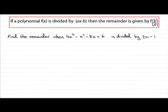Hi. In this example, I'm going to show you how we can find the remainder when the polynomial 4x to the power 4 minus x squared minus 8x plus 6 is divided by 2x minus 1. And to do this, what we use is the remainder theorem up here.